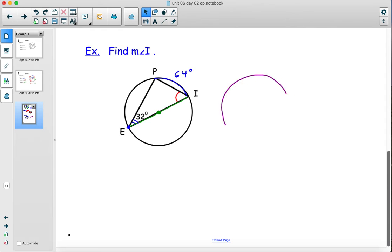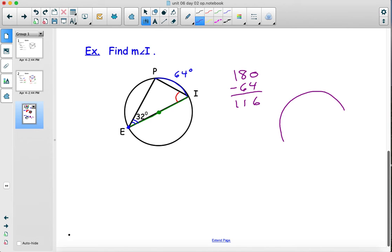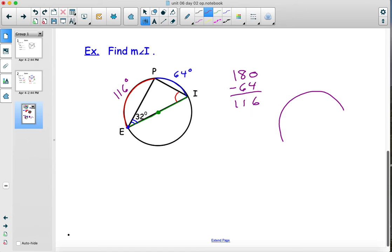And then since E to I is a semicircle, which is 180, then 180 minus 64 gives me 116 degrees for arc EP. So together those add up to 180. And now arc EP. Let's go to red. Arc EP is the endpoints of angle PIE. And so this is an inscribed angle at I. And so it's half the measure of the arc. So half of 116 is 58.